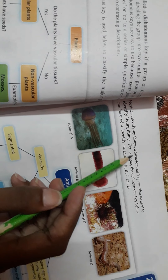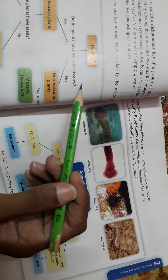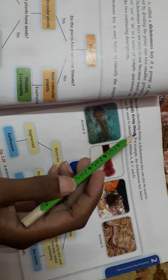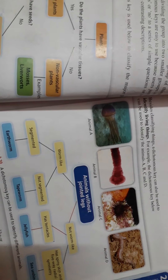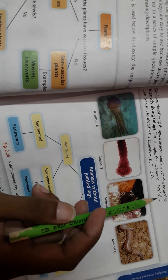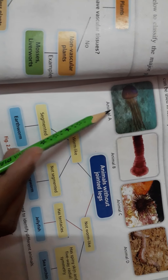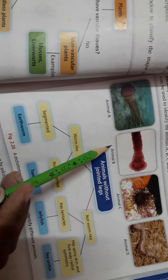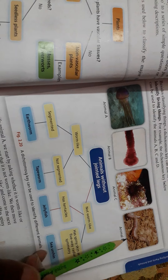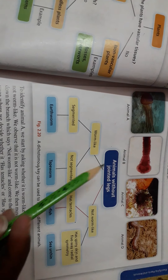Besides classifying things, a dichotomous key can also be used to identify living things. For example, the key below can be used to identify animals A, B, C, and D. Given some animals labeled A, B, C, and D, you have to identify what each one is using the key.